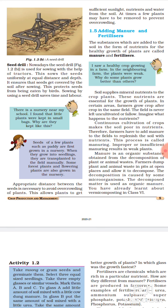Seed drill yeh bhi ensure karta hai ki seeds jab andar chale gaye hai zameen ke, toh uske upar soil ki layer wapas se lag jaye. Aur kyunki ye tractors ki help se kaam kar rahe hain, toh isse labor bhi bach raha hai aur isse time bhi bachta hai. This protects seeds from being eaten by birds. Ab seeds ko zameen mein daalne ke baad hum uske upar soil ki cover kyun karte hain? Kyunki birds jo hoti hain, chidiyaan jo hoti hain, woh field par daana chugti hain. Taaki woh seeds chidiya nahi khale, isliye hum uske upar soil ki ek layer laga dete hain. Sowing by using a seed drill saves time and labor, kyunki ye tractor ki help se chal raha hai.